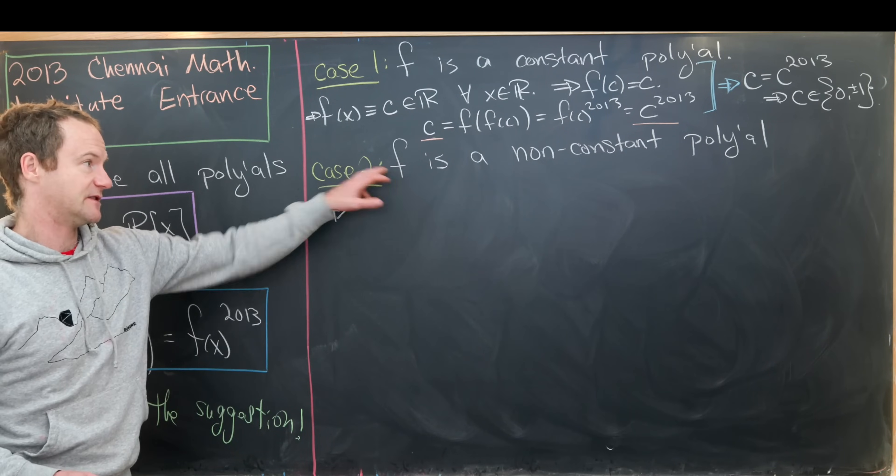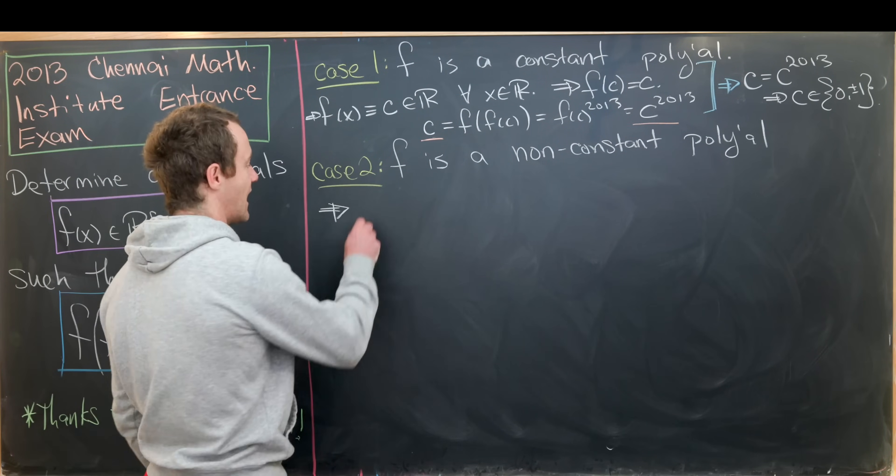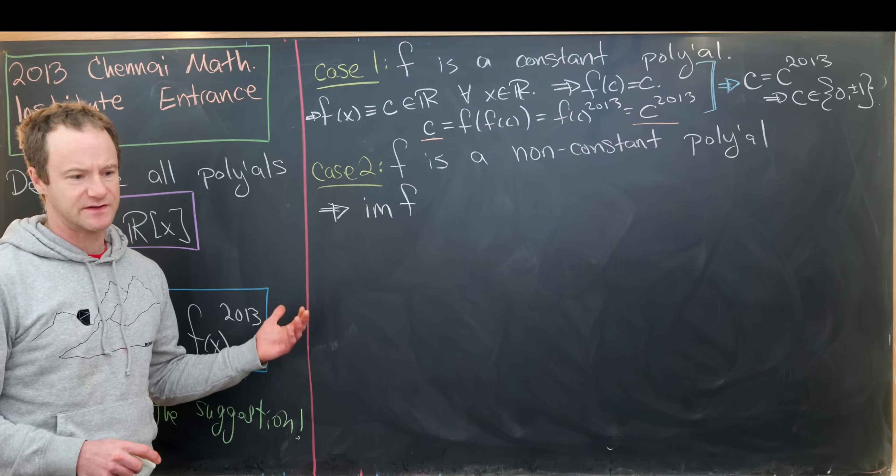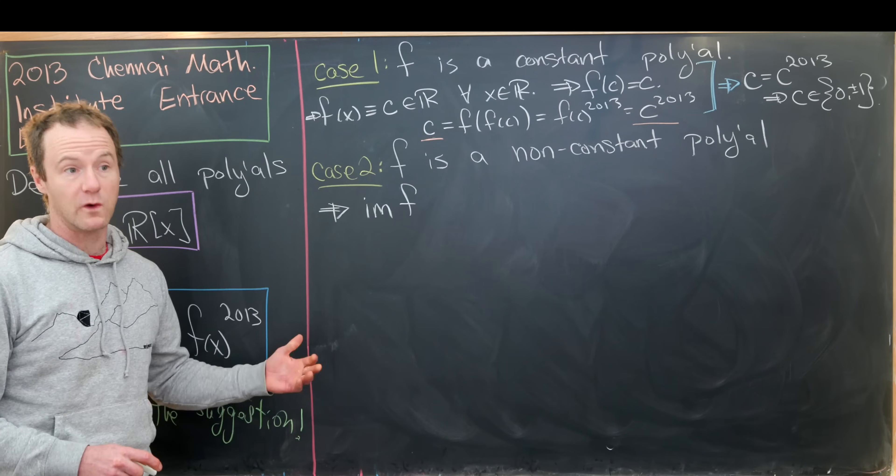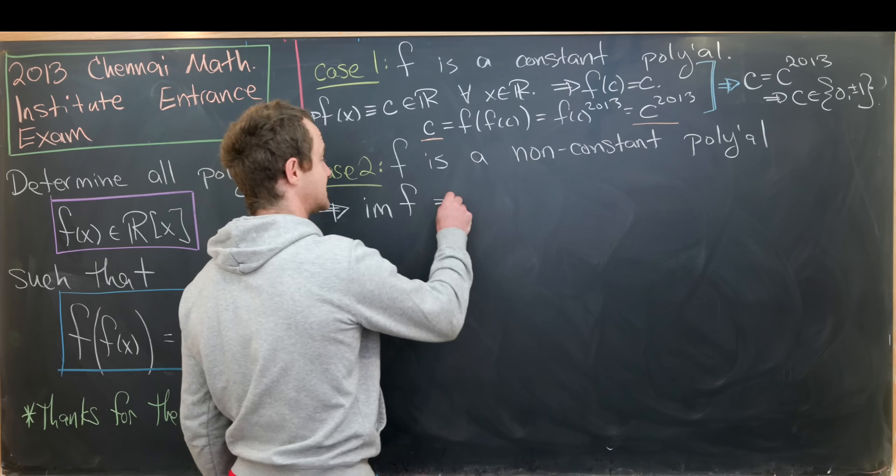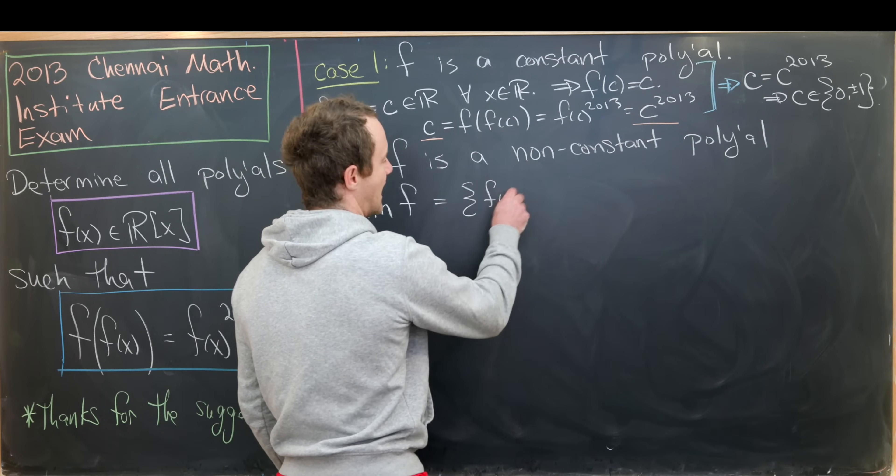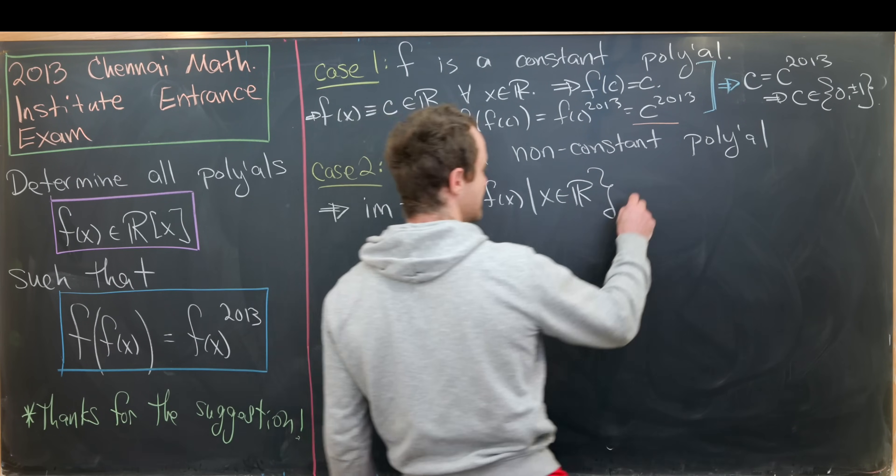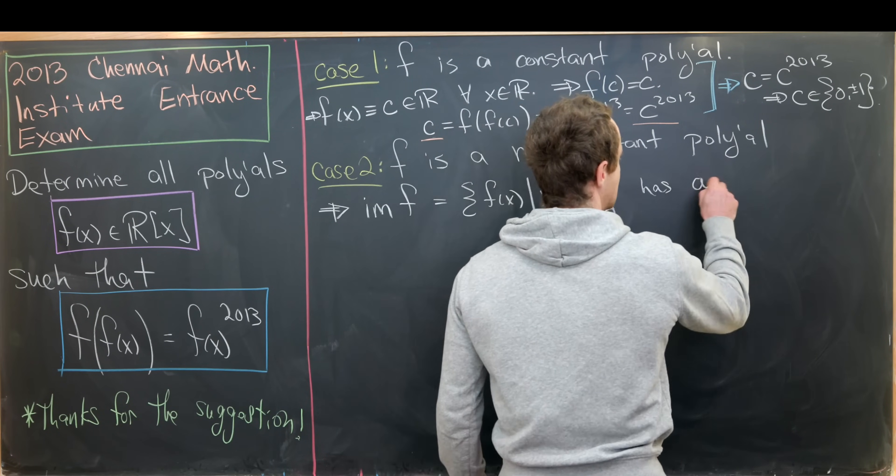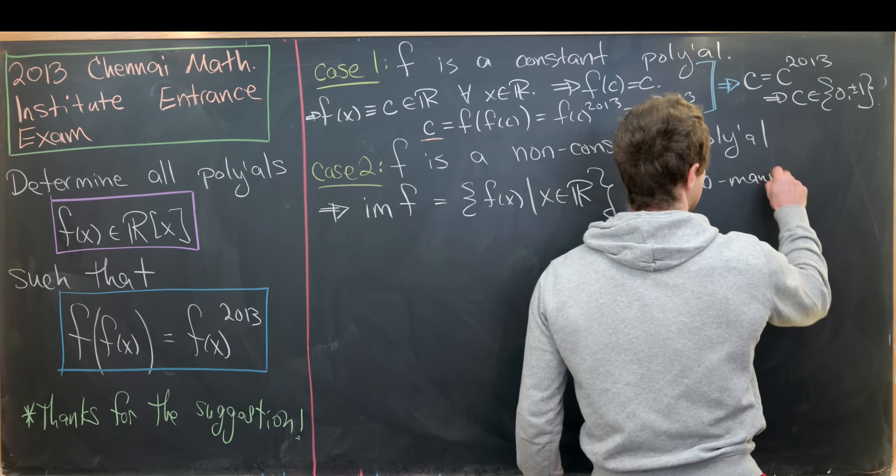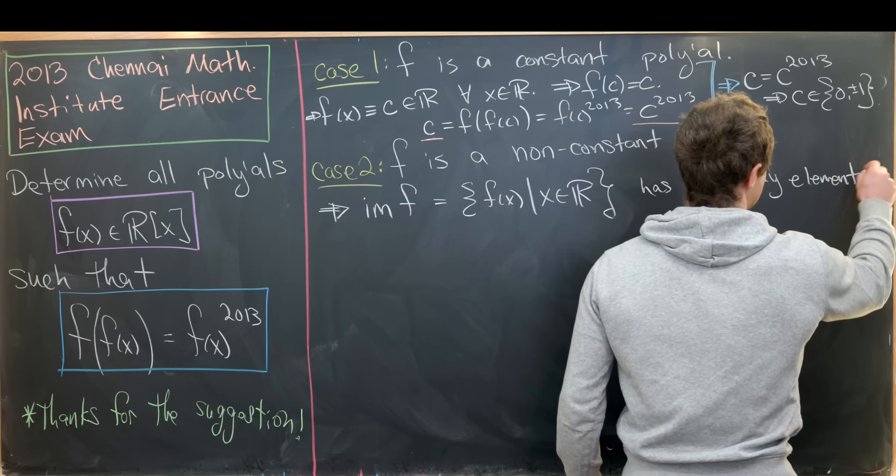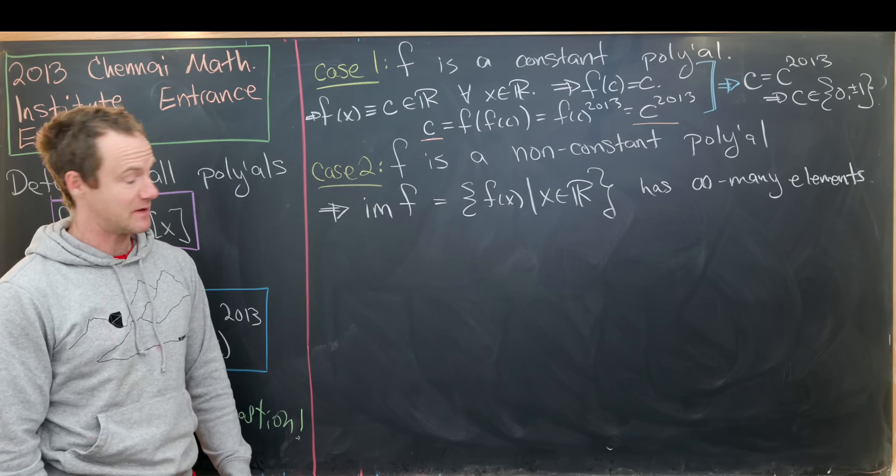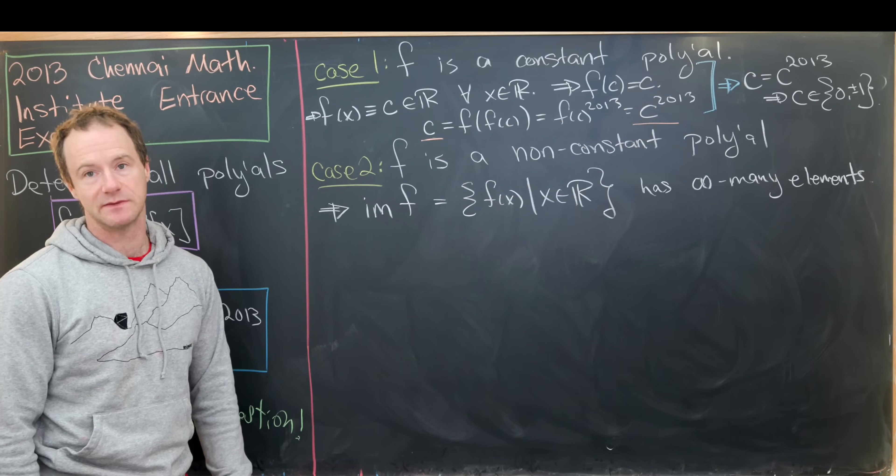I'll use the fact that f is a non-constant polynomial to imply that the image of f—the image of f is also known as the range of f or the set of all values that f takes. This would be all f of x as x runs through all real numbers, that would be another way to write it. So this has infinitely many elements. The set taking on infinitely many values is the same thing as saying that the image takes on infinitely many elements.